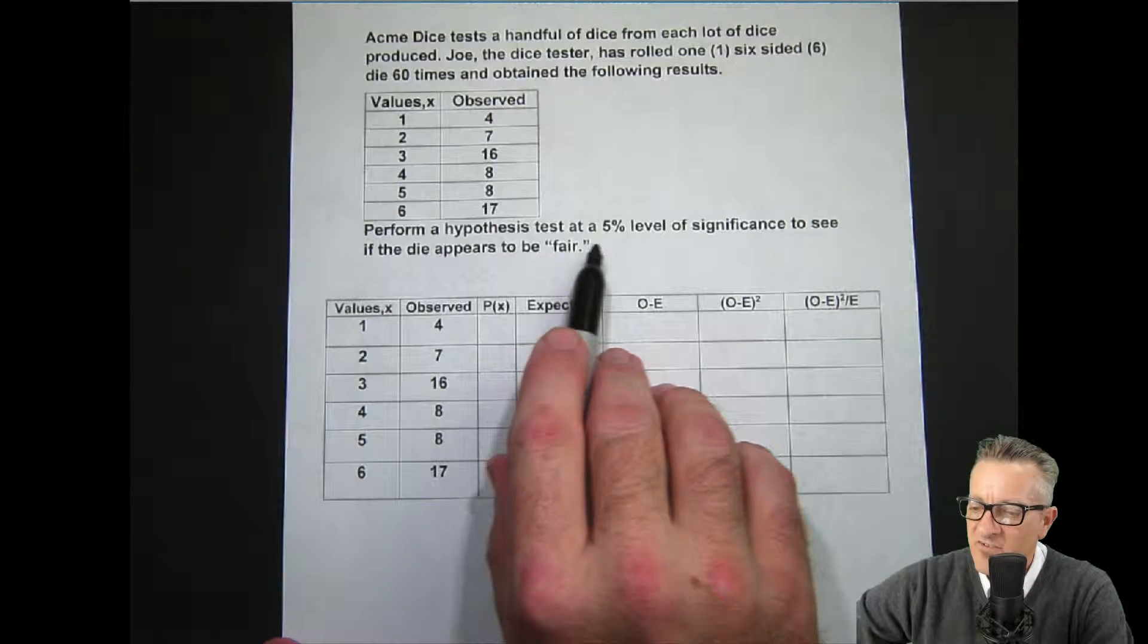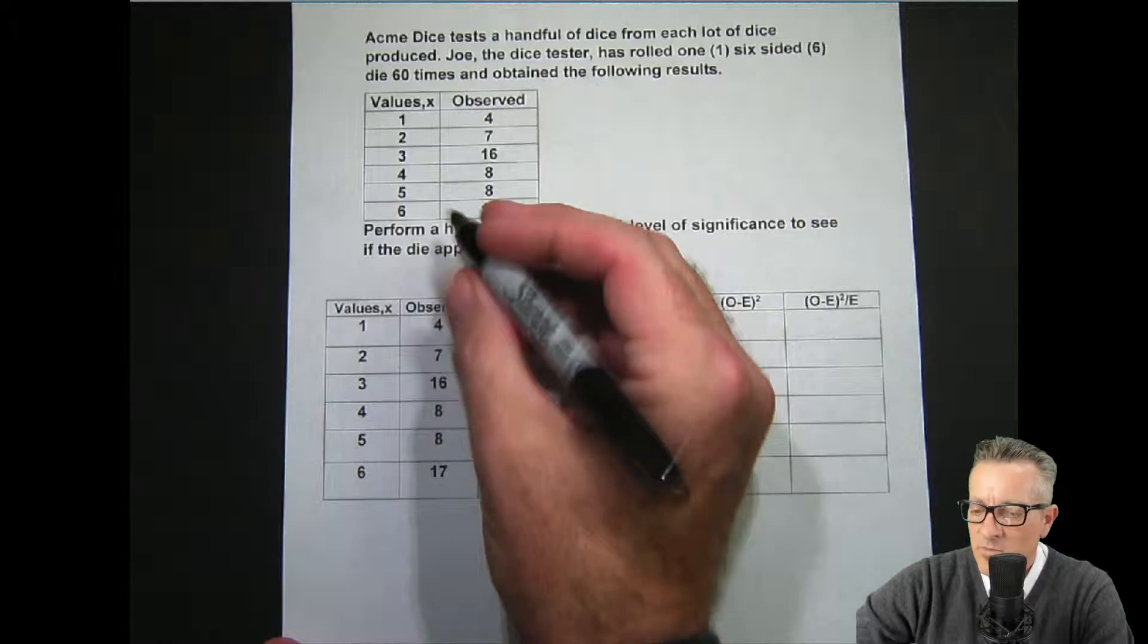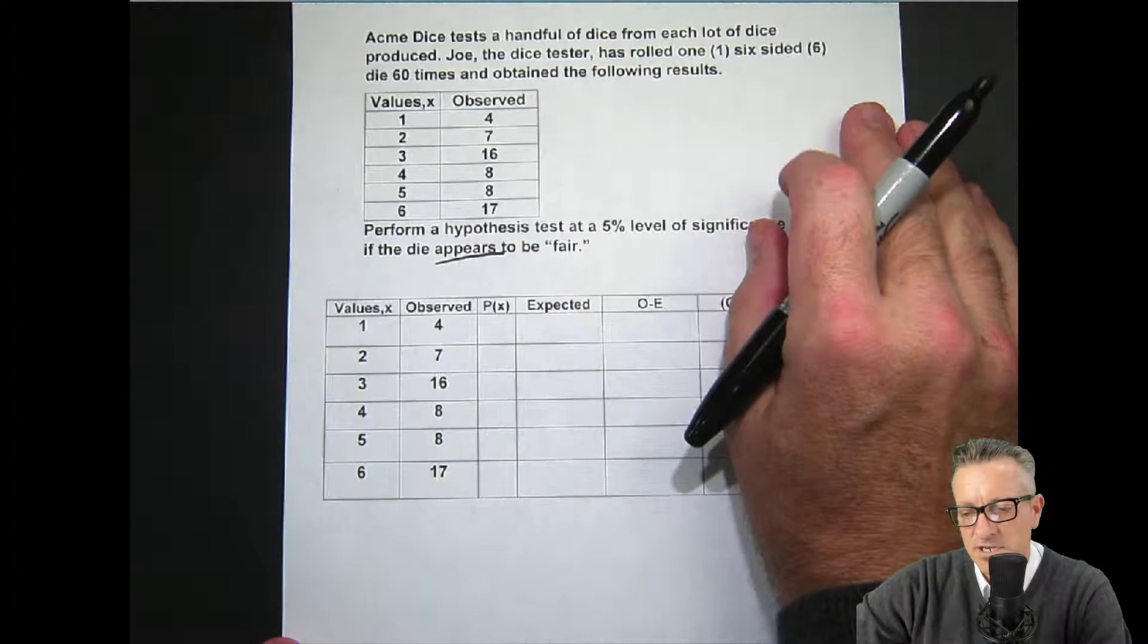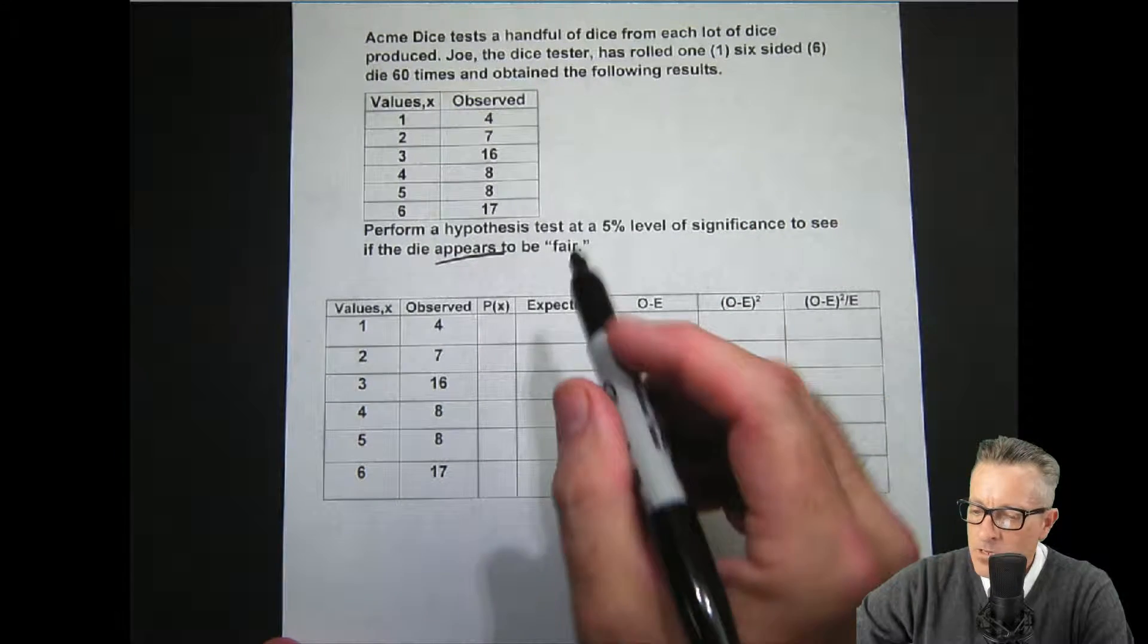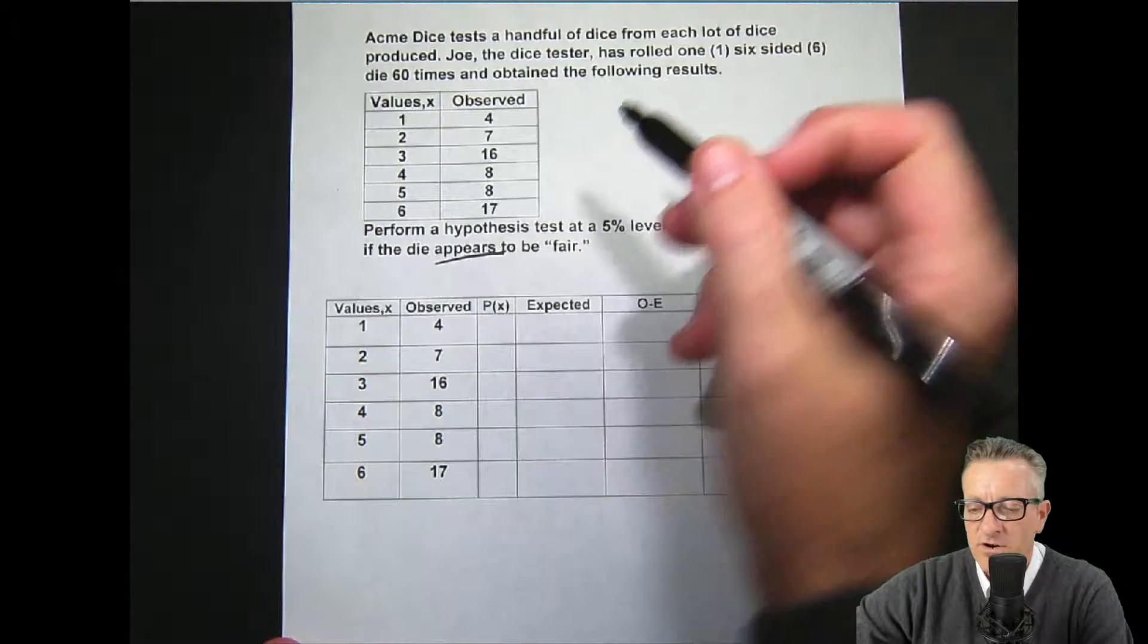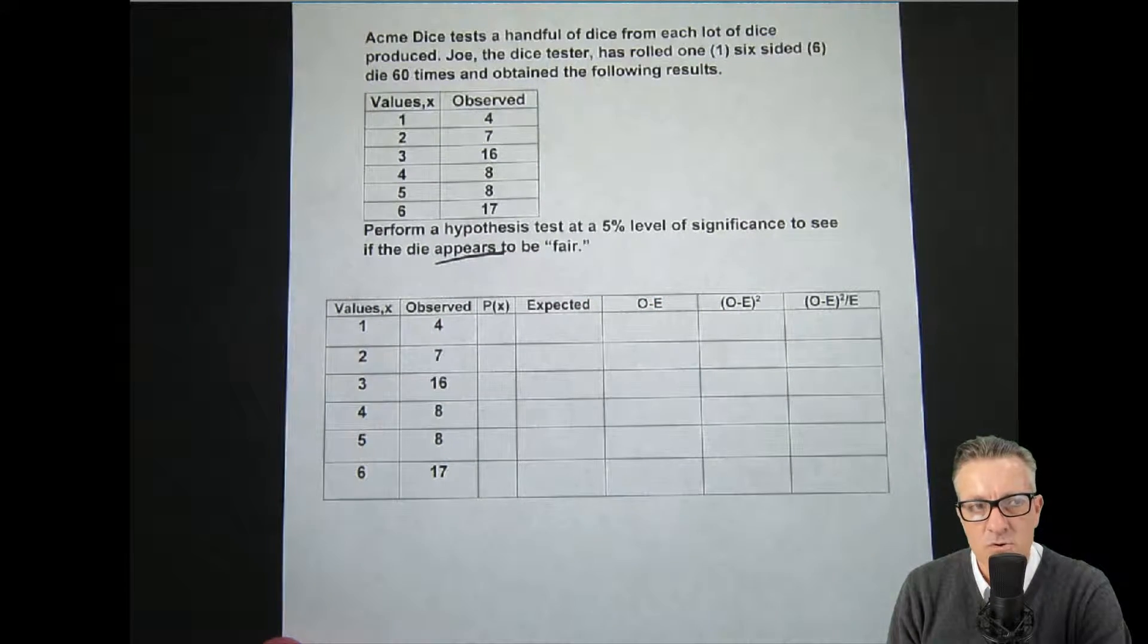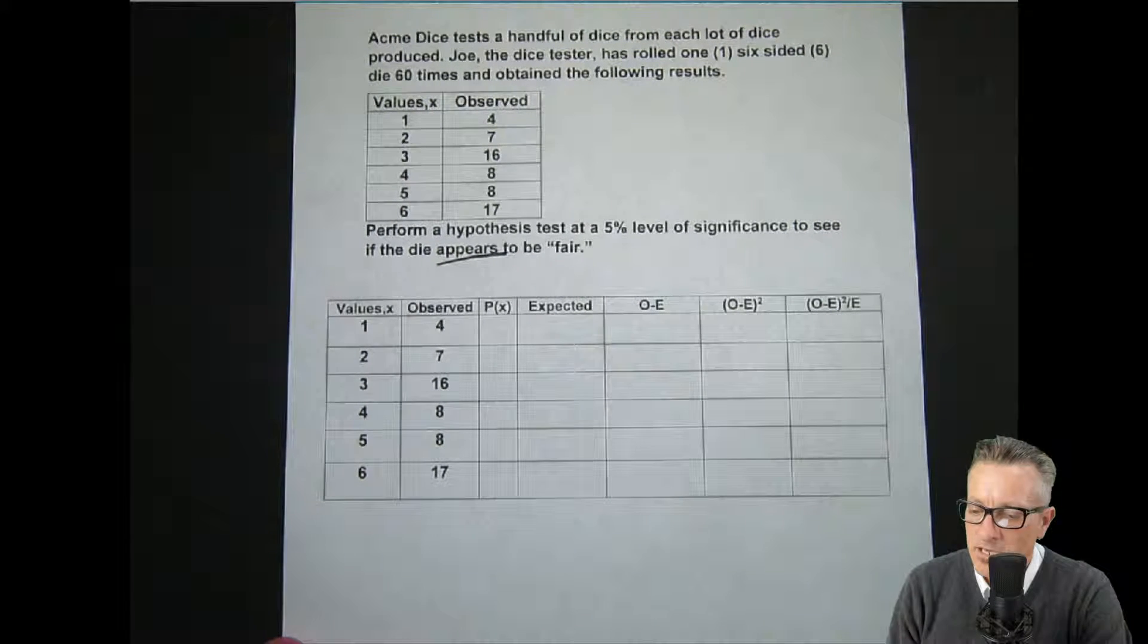Perform a hypothesis test at a 5% level of significance to see if the dice appears to be fair. I put appears because with hypothesis testing, we're not proving as much as we're trying to see if it matches up with what we thought. We want to see if these outcomes are within the range of normal or if they're so far away from the null, meaning status quo, that there's got to be something going on and then maybe we'd want to retest.